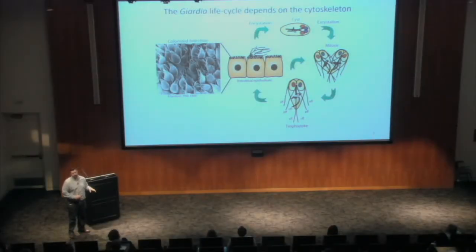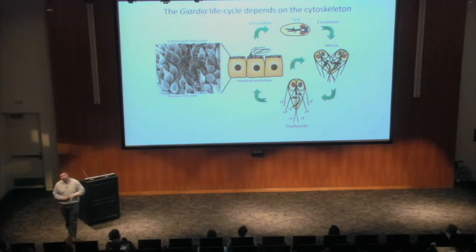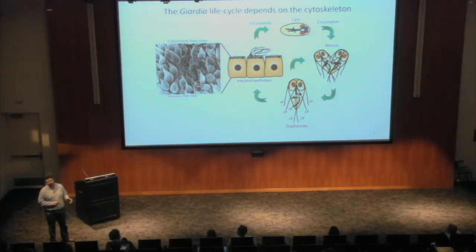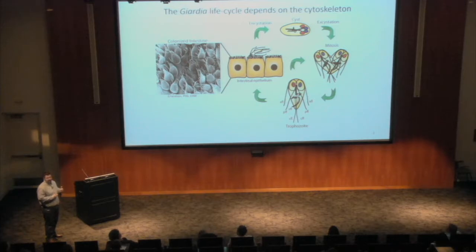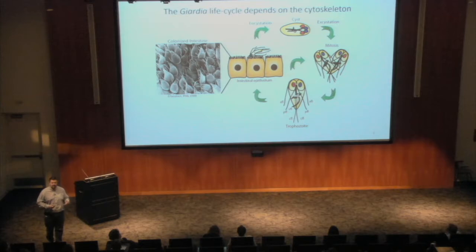First, I want to make the point that Giardia is a major parasite. It's zoonotic, so it can infect any mammal. About 200 million people a year get infected. It's a fecal-oral infection route — there are cysts in the environment, and when people swallow these cysts, they pass through the stomach, where stomach acid signals them to excyst. They crawl out of the cyst wall and rapidly colonize the intestine.